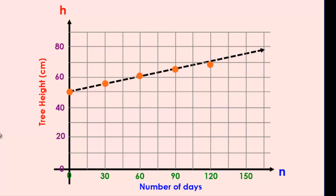We would say that this graph has an upward trend — that's to say that our values on the y-axis are increasing as we go from left to right on the x-axis, or our graph is going upwards from left to right. We could also have a graph that would have a downward trend, which would be the opposite.